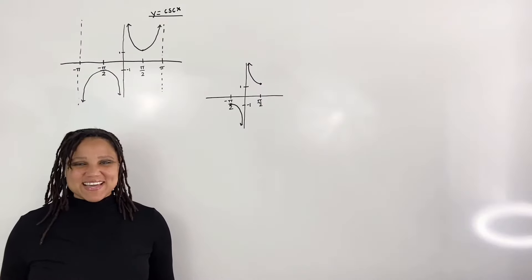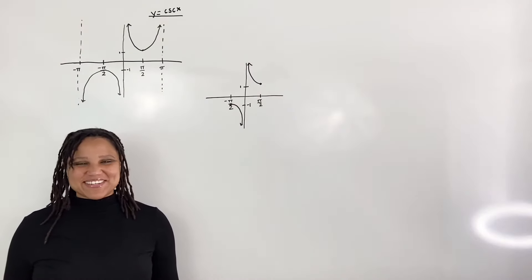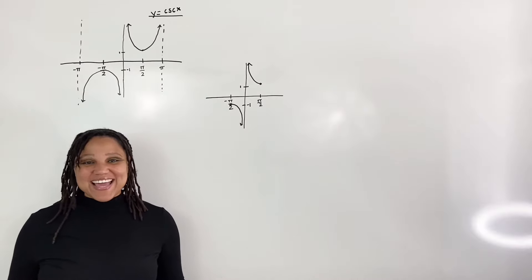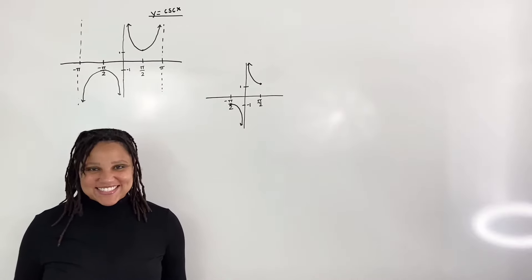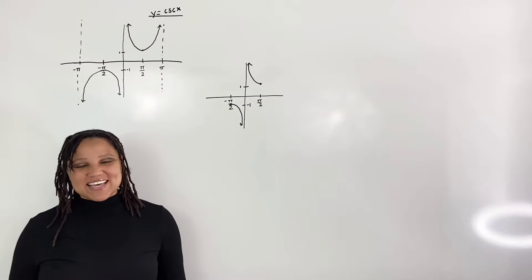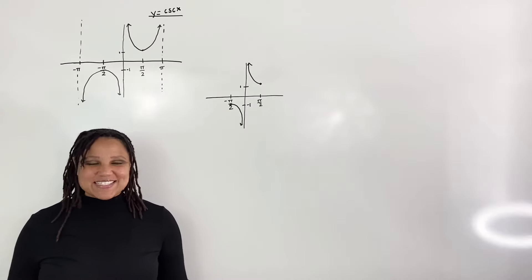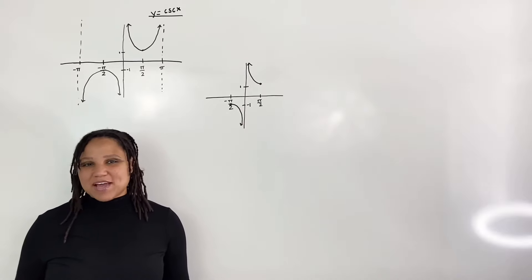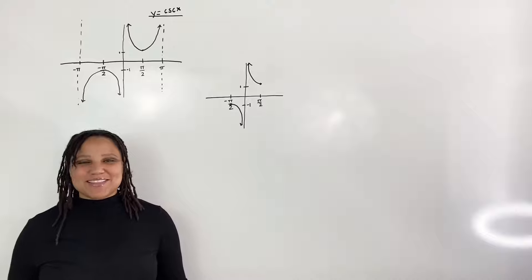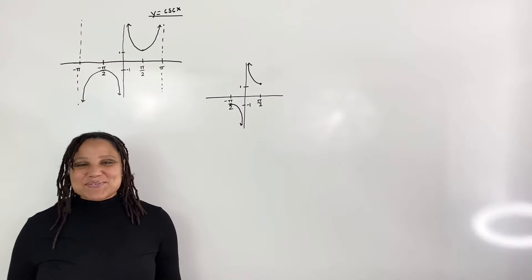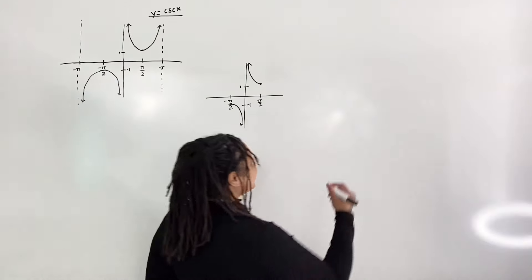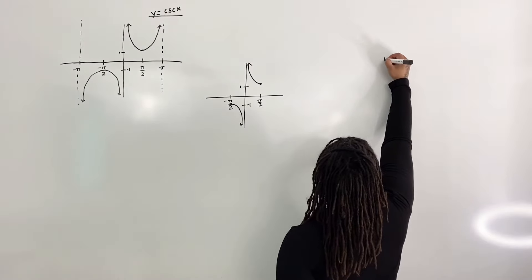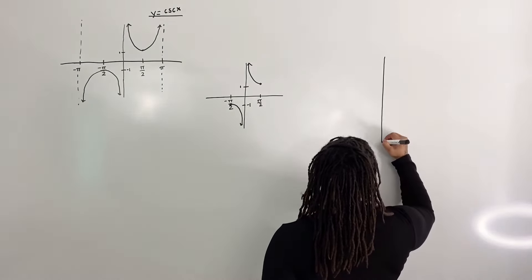The following are the steps for graphing inverse cosecant. Step 1: Draw a neat number quadrant. It is important to note that pi over 2 is approximately 1.6, so we want to put pi over 2 somewhere in between the numbers 1 and 2.